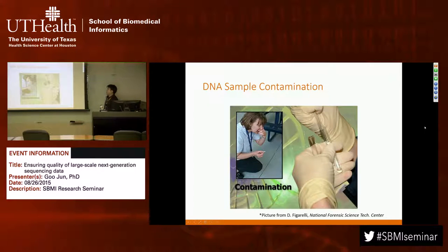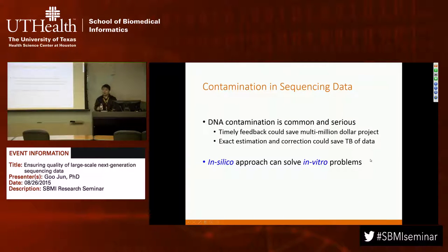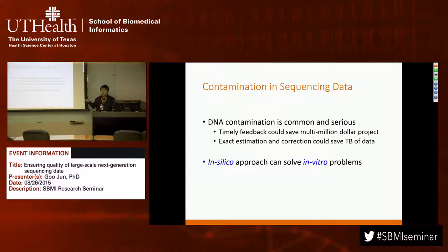DNA sample contamination is a very common problem. Certainly in a lab environment it's more common than you might think, and it's a very serious problem because it usually happens in batches. When it happens in batches it's worse. When there is a protocol change and they don't know there was a problem in their protocol, it can affect many samples. Exact estimation and correction could save terabytes and sometimes petabytes of data. We developed an in silico approach that solves this in vitro problem.